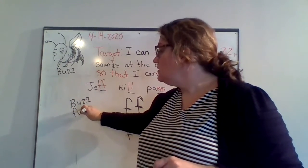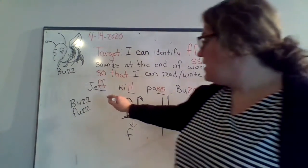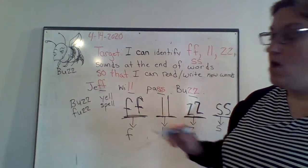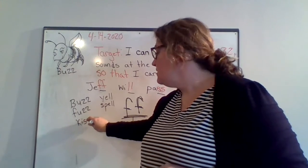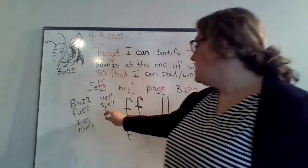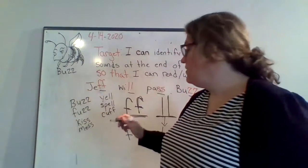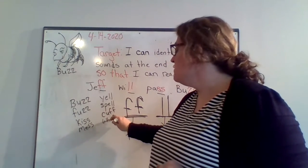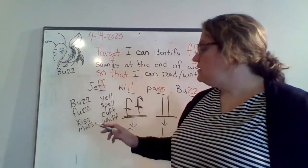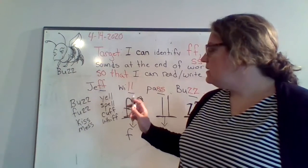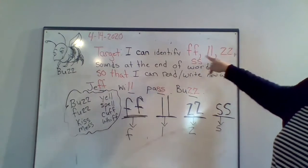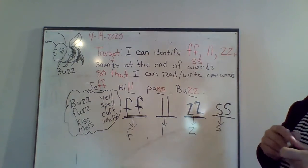So let's think of some words that end with these letters. We have buzz or fuzz - those end with Z-Z. Or we could have yell or spell - those end with L-L. We could have kiss or mess - those end with S-S. We could have cuff, like a handcuff or cuff on your sleeve, or we could have whiff, like I take a whiff of something - those end with F-F. So right now I have buzz, fuzz, kiss, mess, yell, spell, cuff, and whiff. I want you to send me at least one word that ends with F-F, L-L, Z-Z, and S-S. That's your assignment.